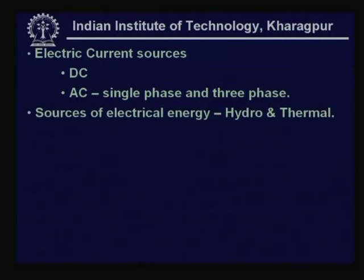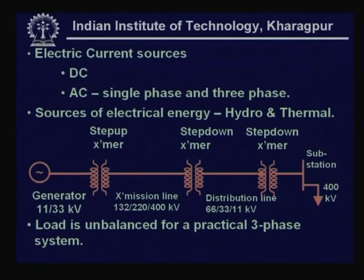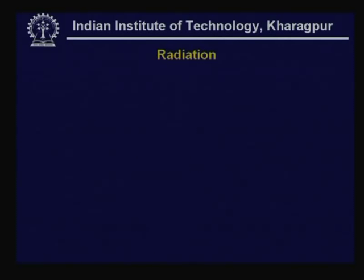The electric current sources could be either DC or AC. The introduction covers basic aspects of electrical energy. Normal usage has been AC single phase or three phase, and the energy could be hydro or thermal - of course there are also renewable and non-conventional energy sources. The diagram here shows what a power system consists of, from generation at 11 or 33 kV down to the user at 400 volts, stepping down at two levels - transmission level and distribution level - through transformers. Load is always unbalanced and in three phases.